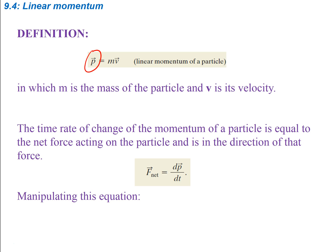The time rate of change of the momentum of a particle is equal to the net force acting on the particle and is in the direction of that force. So that gives us that the net force is equal to the time rate of change of the momentum. As momentum is changing, you would need a force acting on that particle. So just manipulating this equation, we can see that the net force is equal to dp/dt.